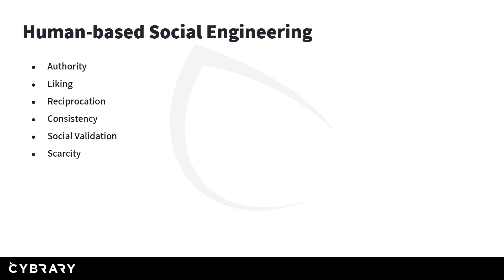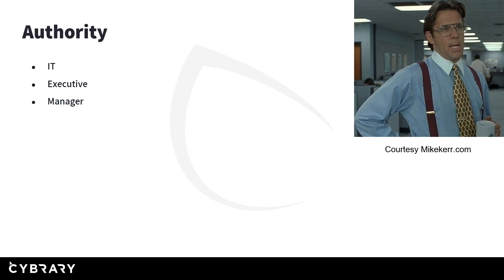Social engineering is all human-based, and there are some common methods that get people to actually do something. With authority, for example, someone calls claiming a position of authority — maybe it's the IT help desk, or a VP saying they need money wired quickly. It might even be a mid-level manager type, like a Bill Lumberg pictured here from the movie Office Space. Generally speaking, some position of authority is used.